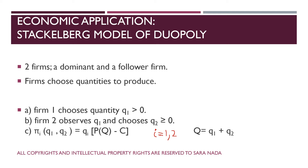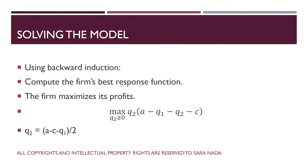In the Stackelberg model of duopoly, we have two firms. Firm 1 chooses its quantity first, then firm 2 observes that quantity and chooses its own quantity at the second stage. Payoffs are given by the function π_i as explained. How do we solve this model? As explained last lecture, dynamic models can be solved using backward induction. We are going to solve this economic application by backward induction.